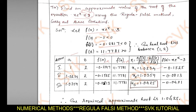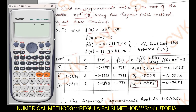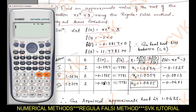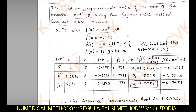Now I will show you how to solve this problem using a calculator. First clear all the memory, then set fix for four decimal places using Shift → Setup. Make sure you are in degree mode. Now I will find f(0), f(1), and f(2).